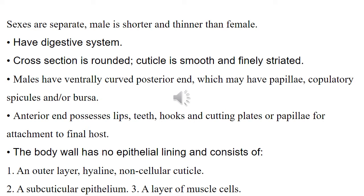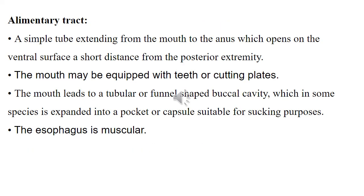The body wall has no epithelial lining and consists of an outer hyaline non-cellular cuticle, sub-cuticular epithelium, and a layer of muscle cells. The alimentary tract is a simple tube extending from the mouth to the anus, which opens on the ventral surface a short distance from the posterior extremity. The mouth may be equipped with teeth or cutting blades, and leads to a tubular or funnel-shaped buccal cavity.